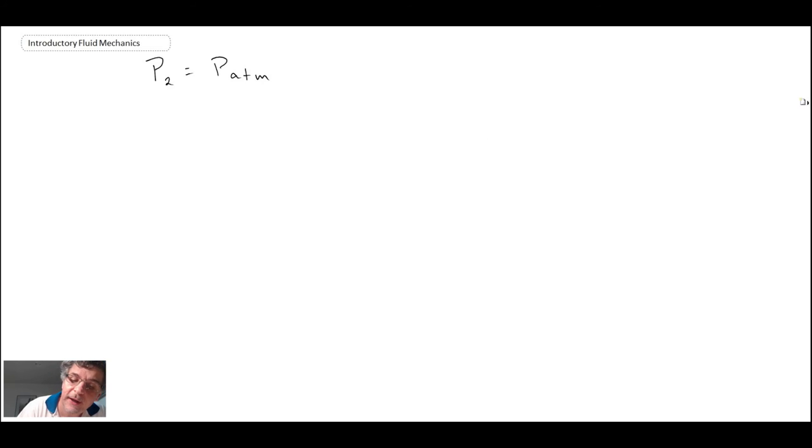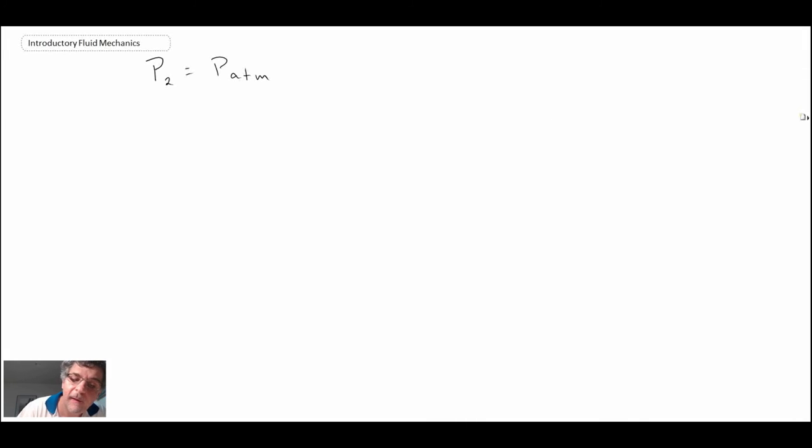The other thing we can say is P₂ equals P_atm because that's where the flow out of the needle is coming into. So rearranging, P₁ minus P₂, if P₂ is at atmosphere, then that would be a measurement of P₁ at gauge pressure divided by the density. And on the right hand side, we have the following terms.